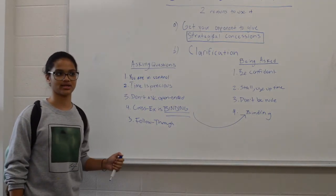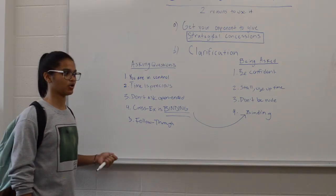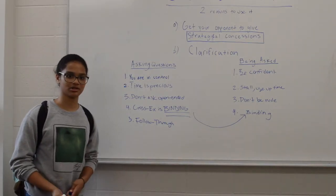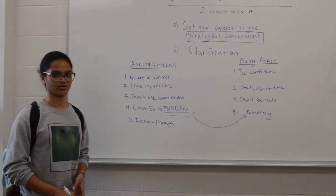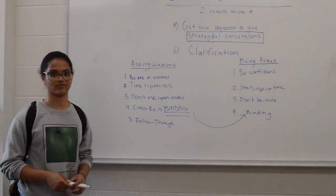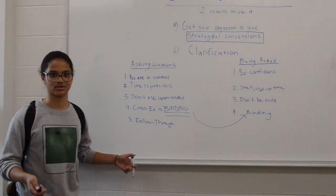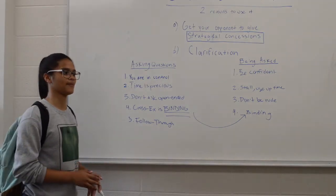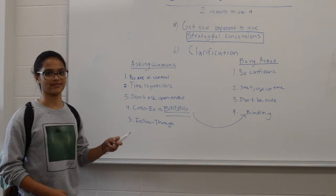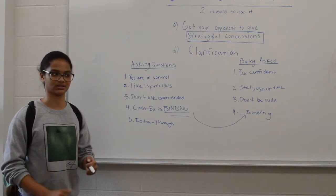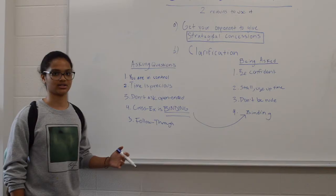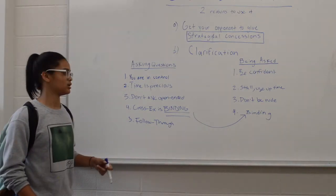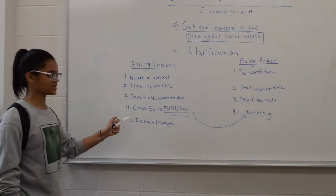Closed-ended questions are questions where they can only really give one or two types of answers. An open-ended question is one where they can get up and explain. For example, if you ask them to explain a part of their case, that allows them to basically advocate for themselves for 30 seconds to a minute. You don't want to turn the cross-ex into a speech time for them, so don't let your cross-ex become a speech for the opponent.